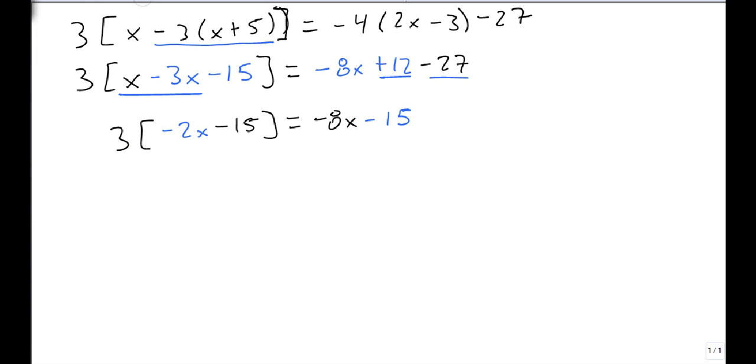So we need to still distribute. We get 3 times minus 2x is minus 6x. 3 times minus 15 is minus 45. Set that equal to minus 8x minus 15. Now both sides are simplified separately. So we can move our x's to one side and our constants to the other.